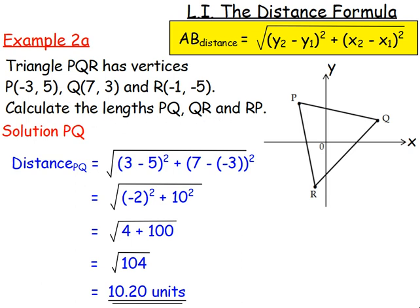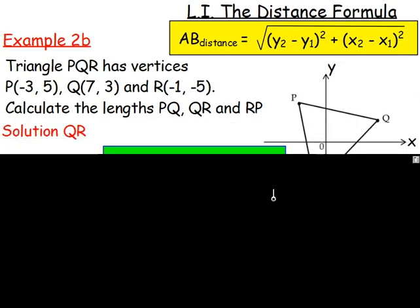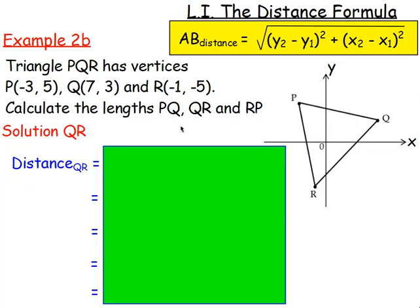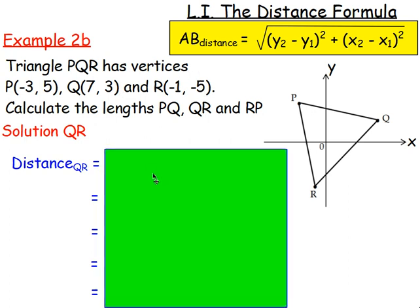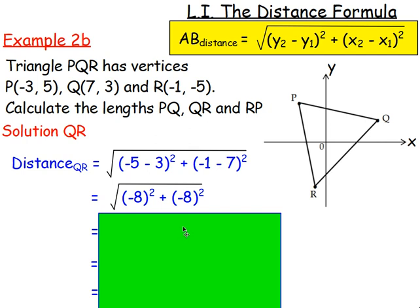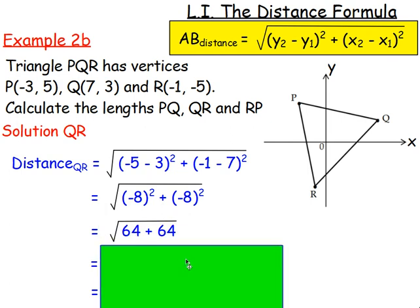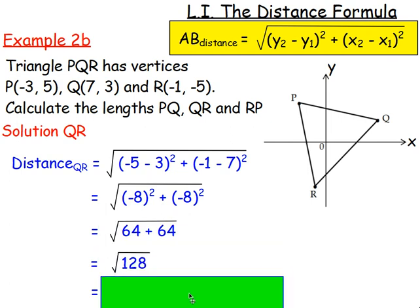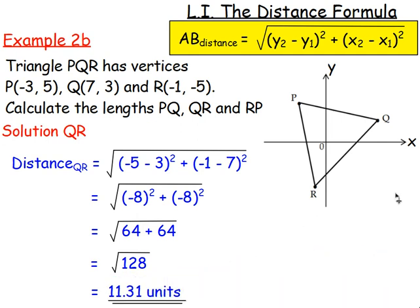Just do the same thing for QR. So solution for QR. Once again, we know the points. We've got Q and we've got R. We know it's (7,3) and (-1,-5). So you can sub the values in. So Y2 take Y1 is negative 5, take away 3. And X2 take X1 is going to be negative 1 take 7. You'd have negative 8 all squared plus negative 8 all squared. Again, because you're squaring a negative, it would become positive. So you've just got 64 add 64, which is 128, and take the square root of that. So 11.31 or 11.3 units.